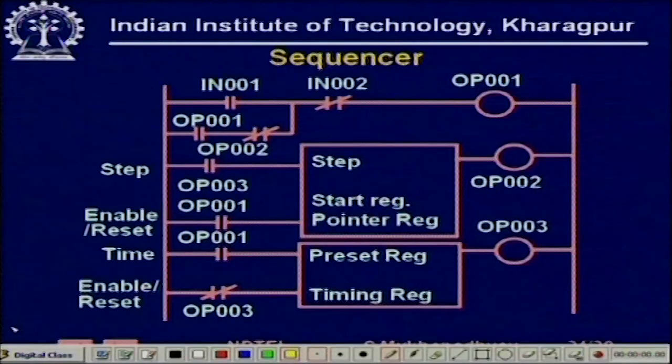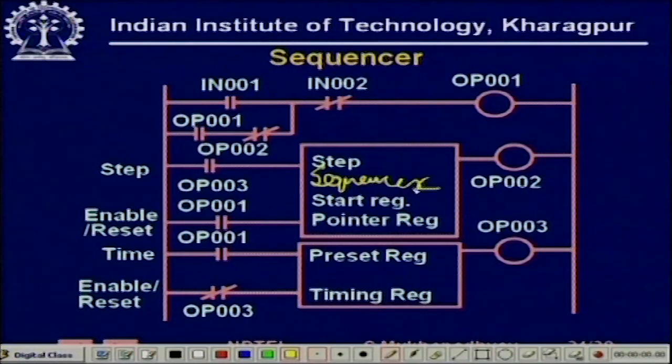There are some special instructions in a PLC RLL program, for example the sequencer. The sequencer is a block which can be separately programmed and which nicely executes a sequence of steps every time it is excited.